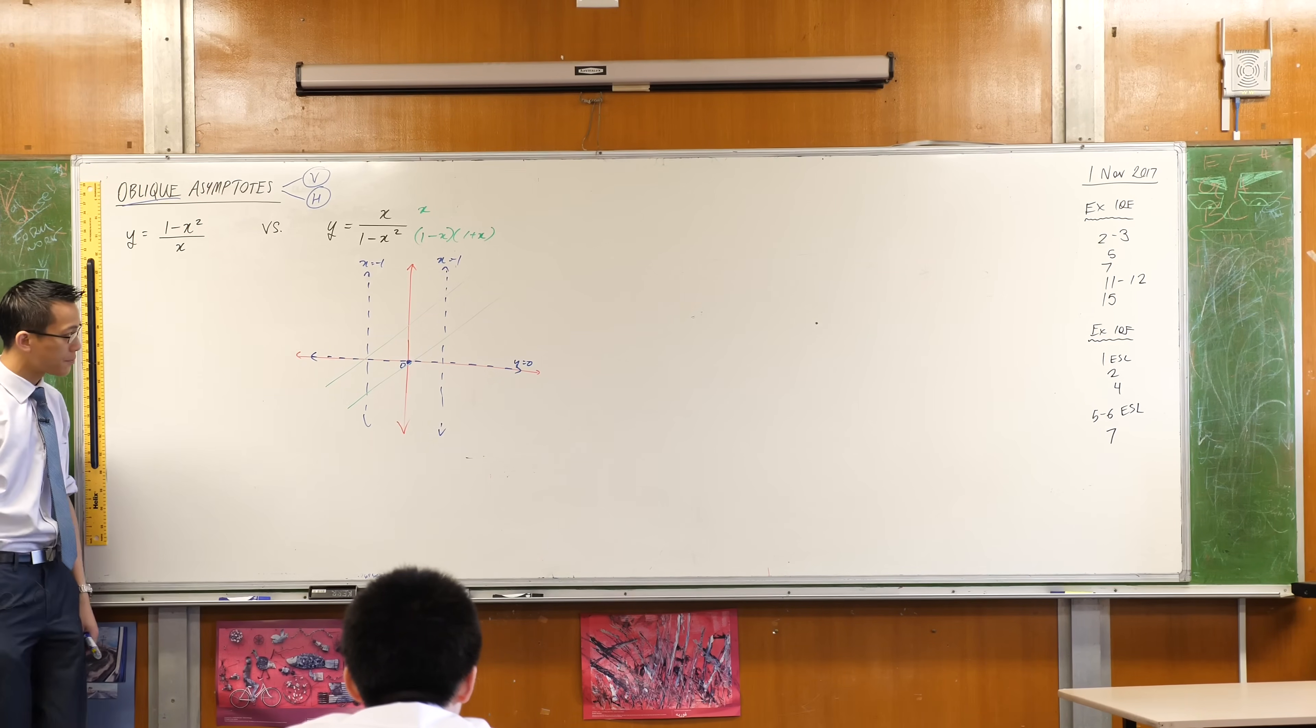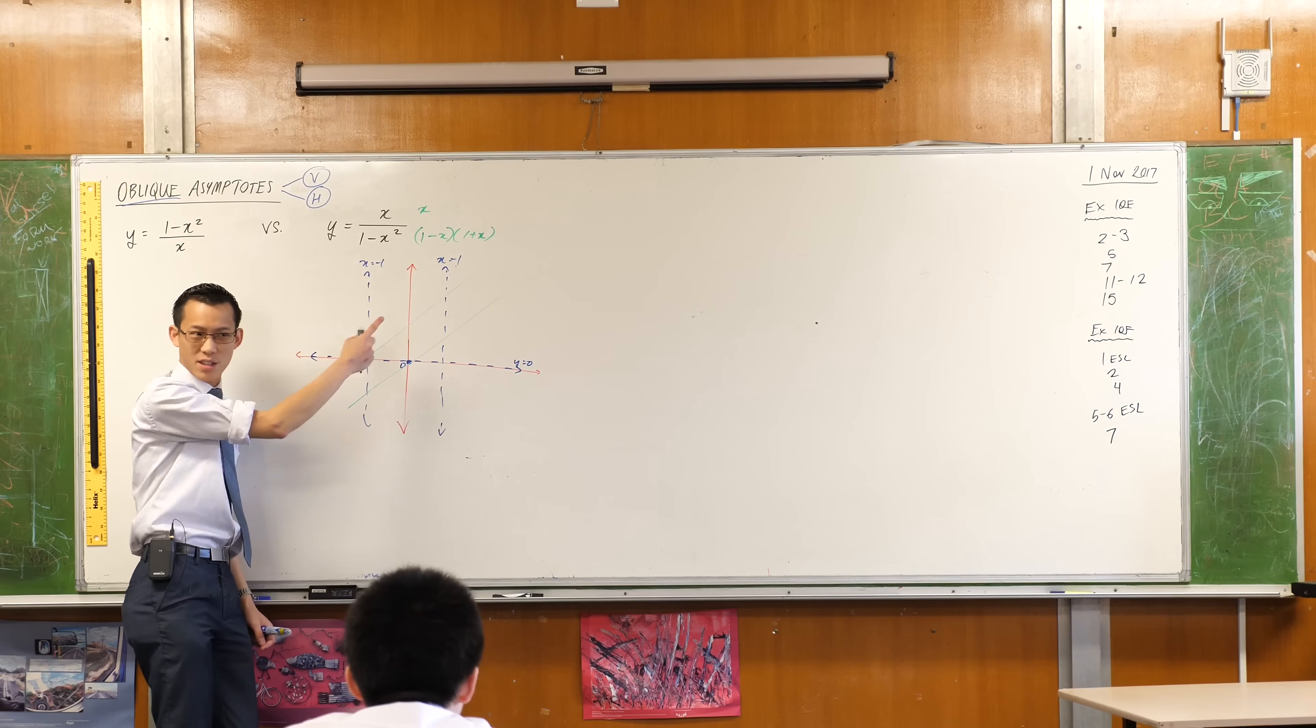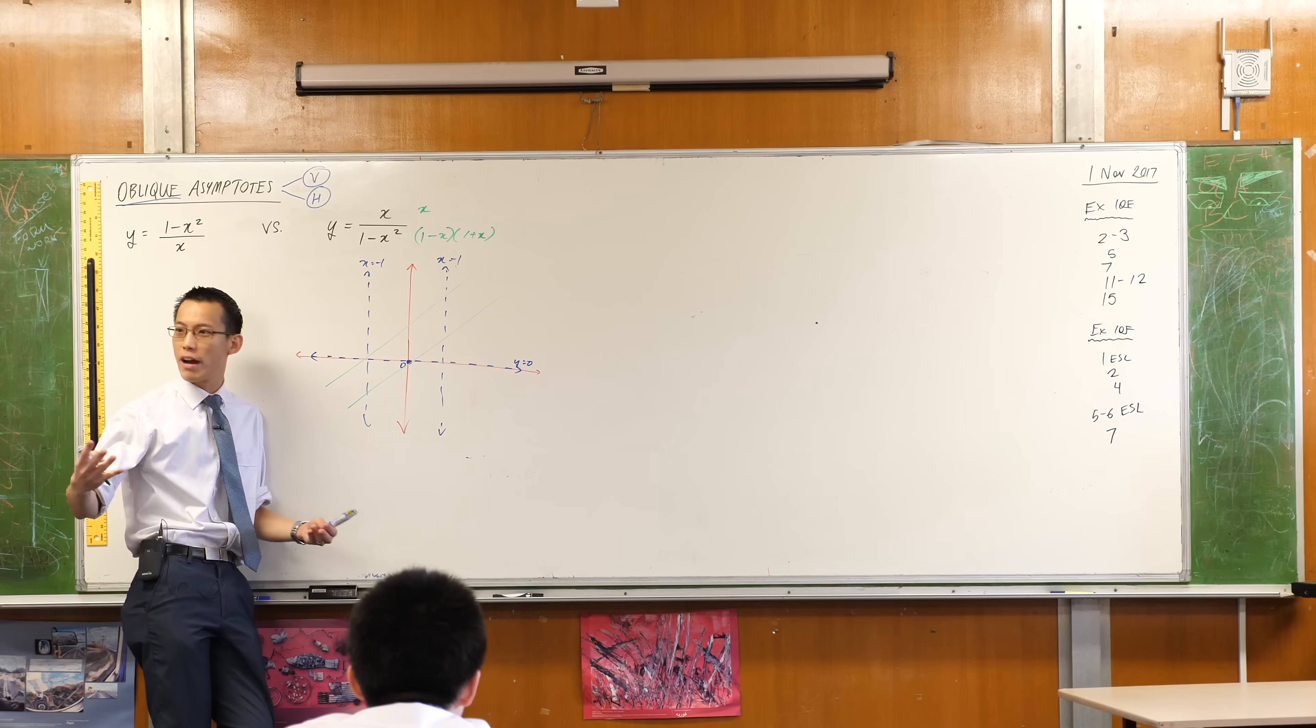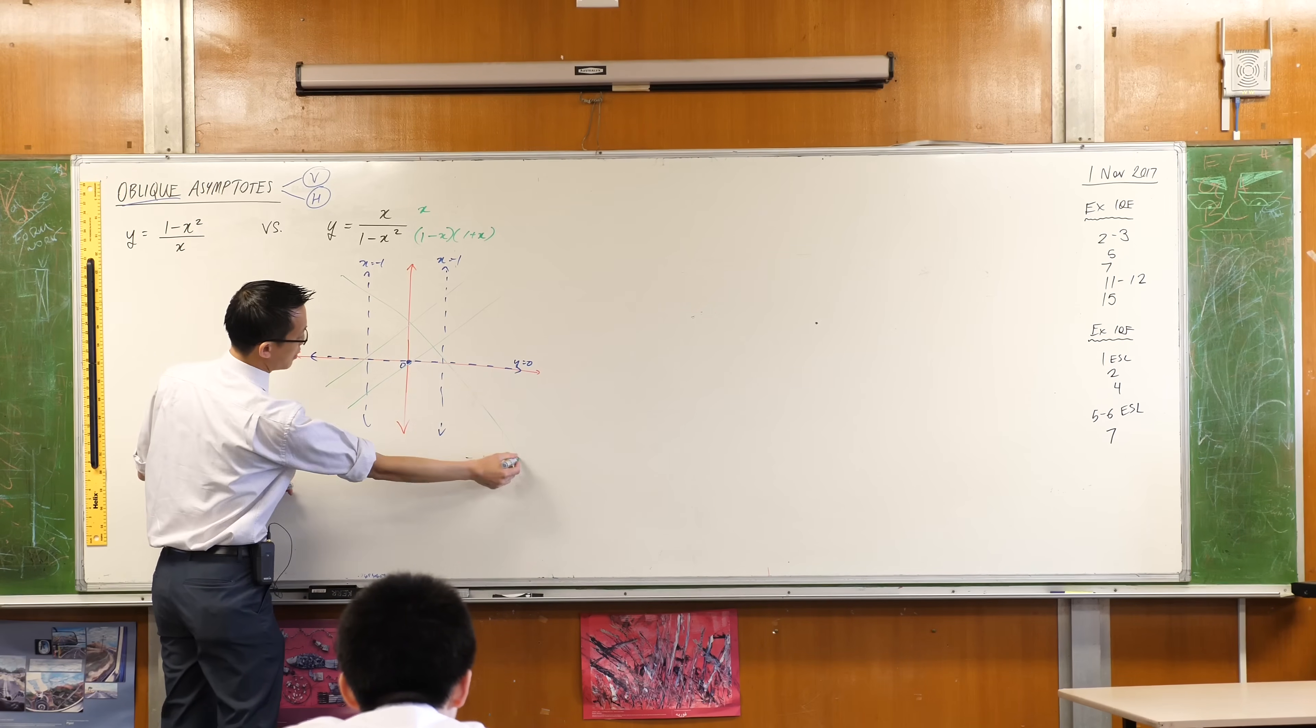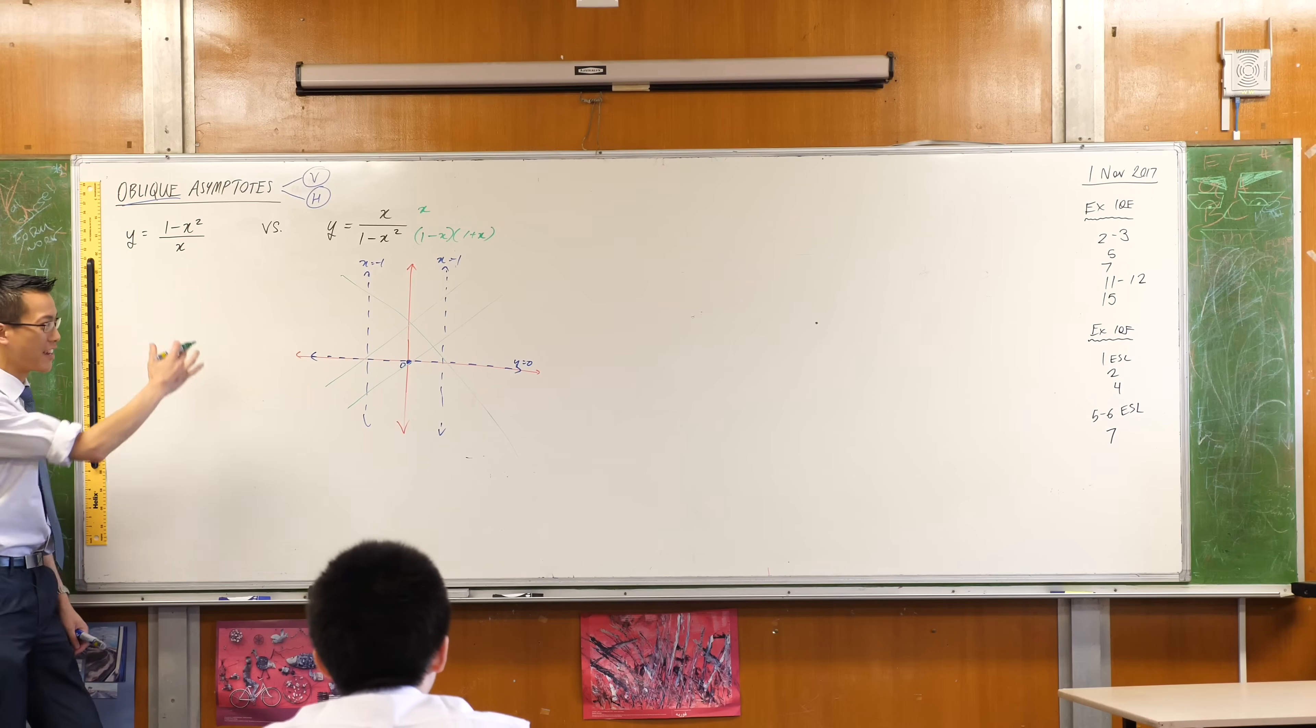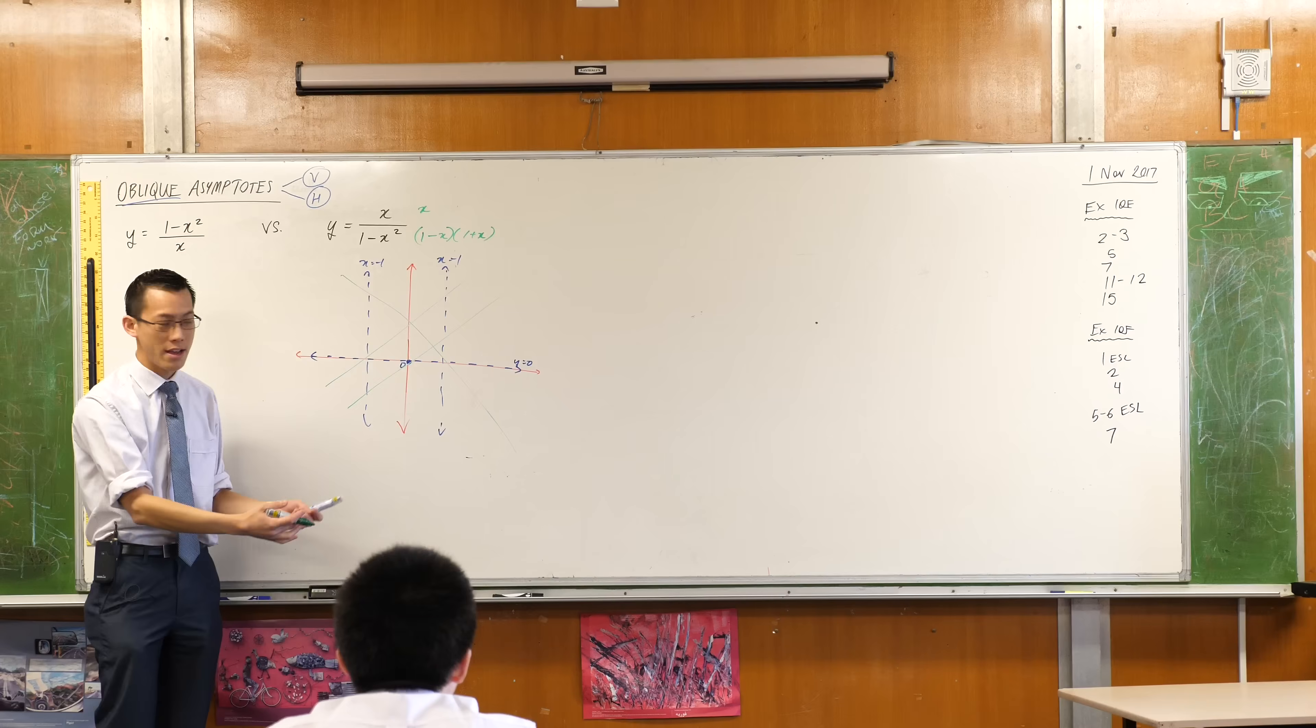But 1 minus x, even though the rest of these lines go like this, right? 1 minus x does not go like this, because 1 minus x doesn't have a gradient like these. What's the gradient of 1 minus x? It's negative 1, so it's actually going down, right? So this, you get the idea, that's 1 minus x, right? And that's kind of a big deal, having it going in that direction, because it changes how our factors behave, right?